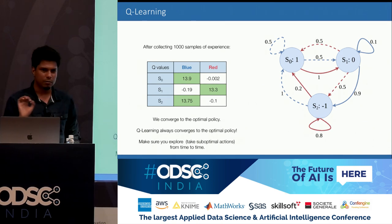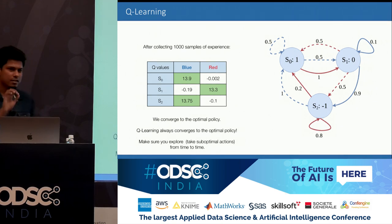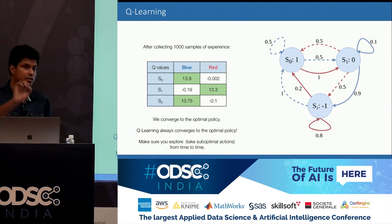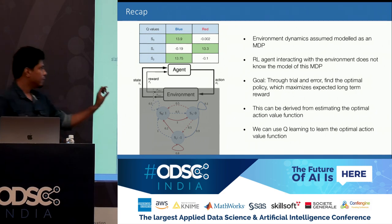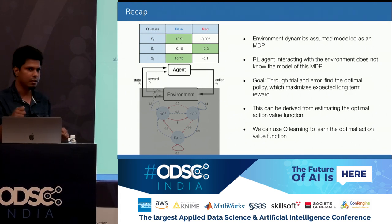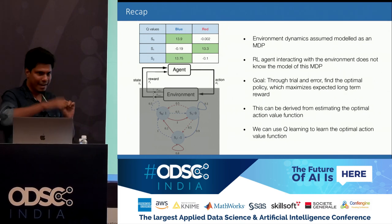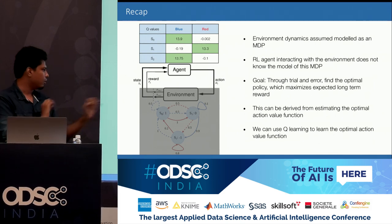One important condition is to make sure you explore from time to time — sometimes take a suboptimal action. This ensures the agent does not get stuck in a loop and all states are visited. To recap: we have an environment modeled as an MDP, an RL agent interacting with this environment through trial and error to find an optimal policy, and this can be done using an algorithm called Q-learning.